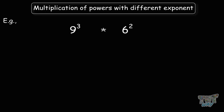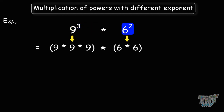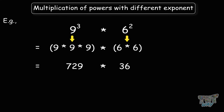Next: 9 to the power of 3 multiplied by 6 to the power of 2. Here the bases are different and the exponents are also different. There is no law of exponents for such questions when both bases and exponents are different. You simply expand and multiply: 9 times 9 times 9 is 729, and 6 times 6 is 36. Multiplying those gives 26,244. So there is no law of exponents when bases and exponents are both different.